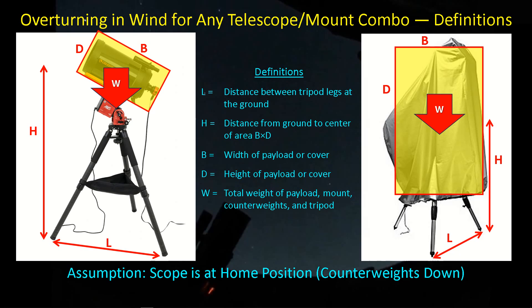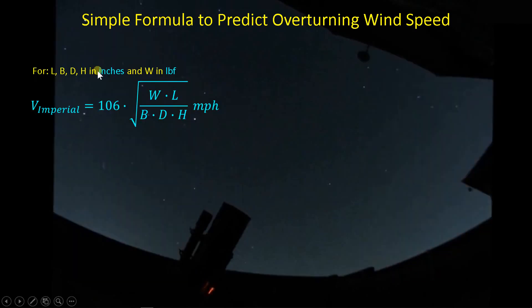Here's the formula. If you use inches and pounds in the calculations like I do, another version of this formula, if you work in the SI units of centimeters and kilograms. Here I'm taking all the length dimensions and measuring in inches. I'm taking my weight, total weight of the system, and that's in pounds. Or conversely, all the length dimensions are in centimeters and the weight is in kilograms. Plug your numbers into this formula. Take the square root, multiply by 106, and now you get the wind speed that would cause your setup to tip over.